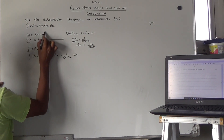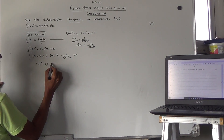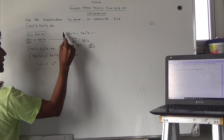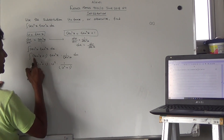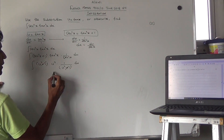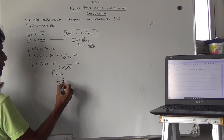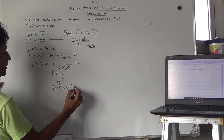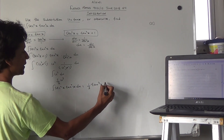We were told to use u = tan x, so tan²x + 1 is u² + 1, times tan²x which is u², times 1/sec²x. Since sec²x = tan²x + 1 = u² + 1, these cancel out. We're left with the integral of u² du, and integrating gives us (1/3)u³.